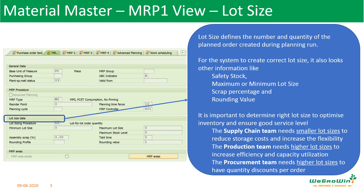It is important to determine the right lot size from a business point of view. It is very important to define the lot size to optimize inventory and ensure a good service level, because the supply chain team needs smaller lot sizes to reduce storage cost and increase flexibility, the production team needs higher lot sizes to increase efficiency and capacity utilization, and the procurement team needs higher lot sizes to have quality discounts per order.